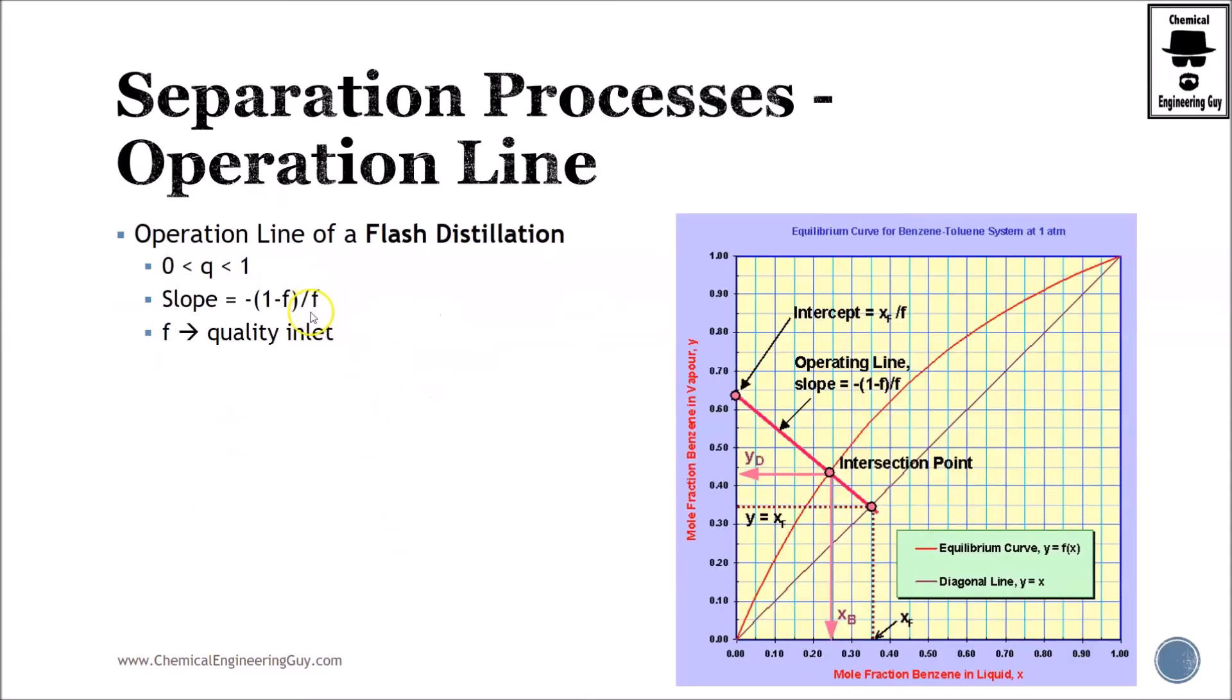Now we have the operation line of a flash. Q will be the amount of liquid versus the feed. Or you can also say that this is f because you can relate them. The slope will be this one right here on the operation of the flash. You will always have this part right here. Make no worries, we're going to be working towards obtaining this line. But as you can see here, this is the intercept, this is the slope. Another intersect with the equilibrium, another intersect with the x equals to y line.